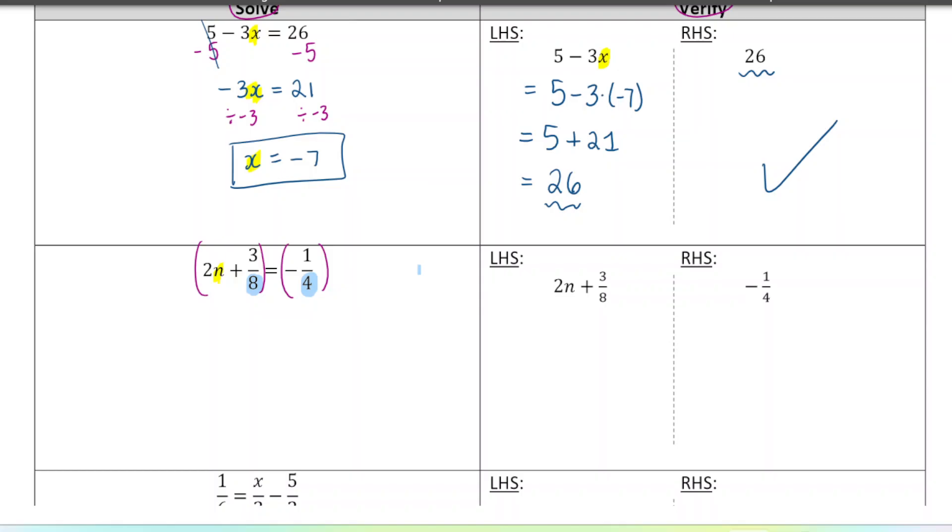So here we're going to multiply everything by 8, so both sides of the equal sign. So we're keeping everything balanced. We're not changing the solution of the equation by doing this, we're just writing it in an equivalent way that's easier to work with. So let's multiply both sides by 8. And we'll have 16n plus, now 8 times 3 divided by 8 is just 3. So the 8's kind of cancel each other out there. And then on the right hand side, we do 8 times 1 divided by 4, so we get negative 2.